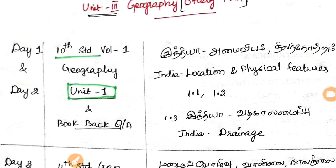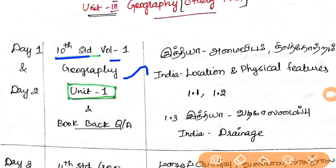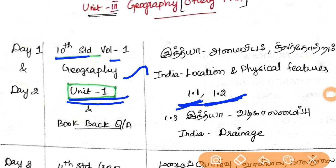On Day 1, the 10th standard book Volume 1 geography — Unit 1. In Unit 1, we have India's location and physical features, covering sections 1.1 and 1.2. This is the first of the two units.